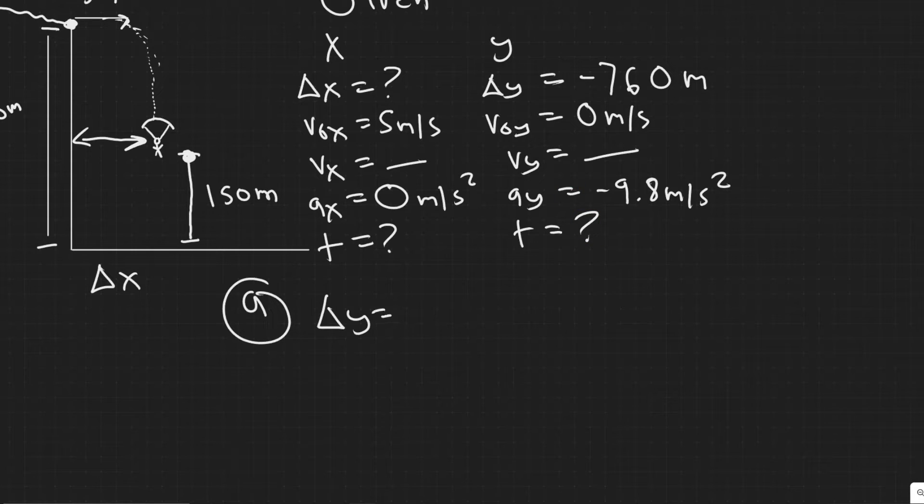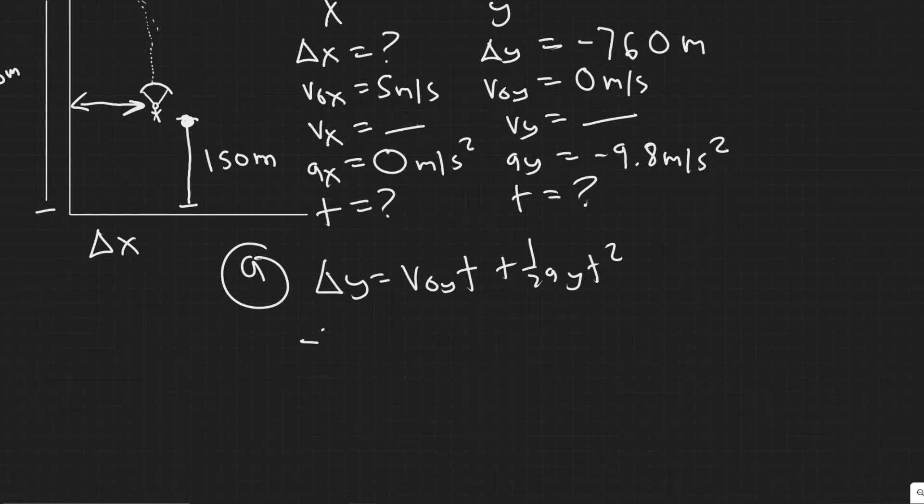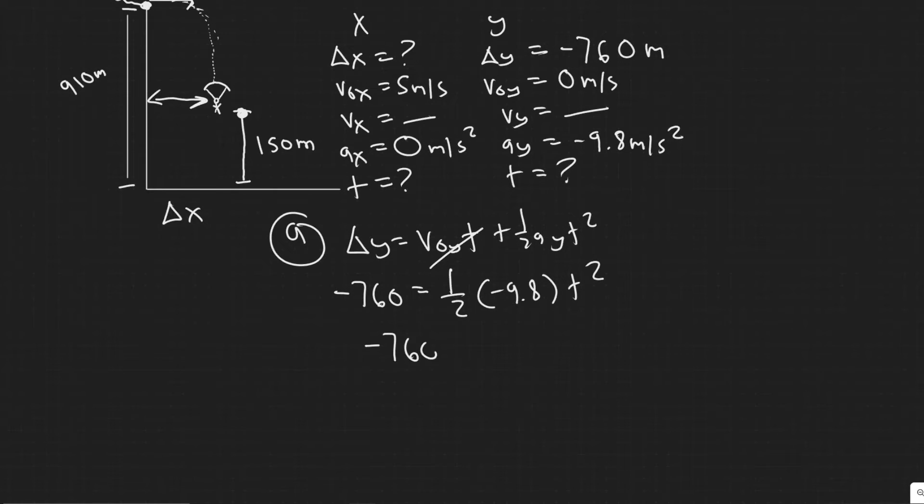The one we're going to use is delta Y equals V sub 0Y times T plus one half A sub Y T squared. The reason we're using this one is because we have delta Y, we have V sub 0Y, and we have A sub Y, meaning we can solve for T. Delta Y is going to be minus 760, just plugging it in now. V sub 0Y is zero, so zero times anything is just zero. This term basically just disappears. We have one half, multiplying that by A sub Y minus 9.8, and then multiply that by T squared.